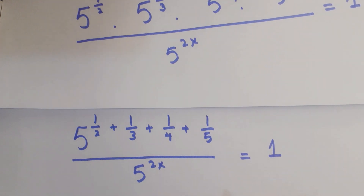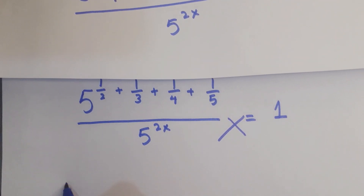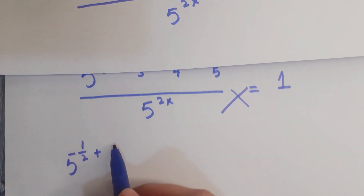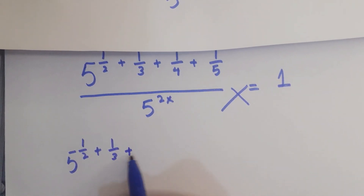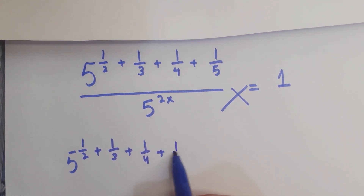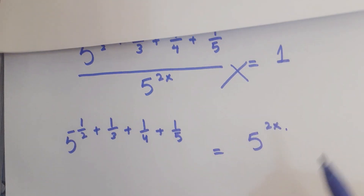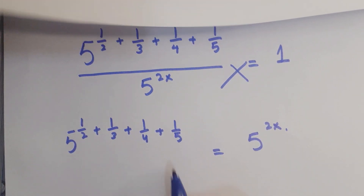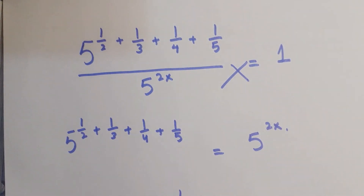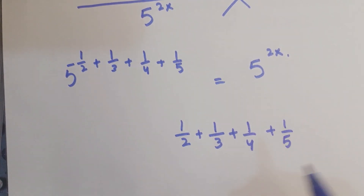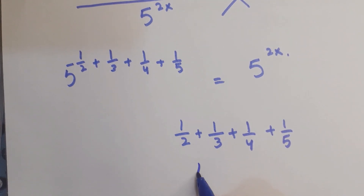Now by applying cross multiplication, you get 5 to the power (1/2 + 1/3 + 1/4 + 1/5) is equals to 5 to the power 2x. Now in order to add 1/2 + 1/3 + 1/4 + 1/5, we have to take the LCM of 2, 3, 4, and 5.